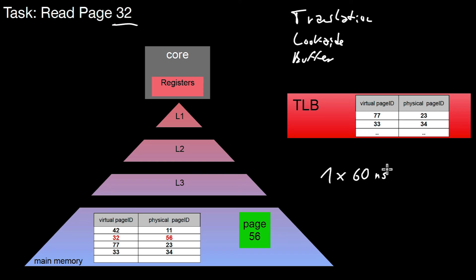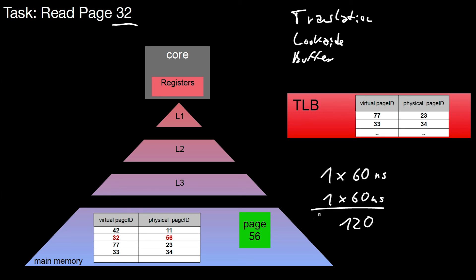But then, once we have the mapping, it might also be the case that the physical page we want to access — physical page number 56 in this example — is not in any of the caches. So we have to go to main memory again and pay the price of another 60 nanoseconds. In total, just for accessing a single address, we have two times the memory latency here.